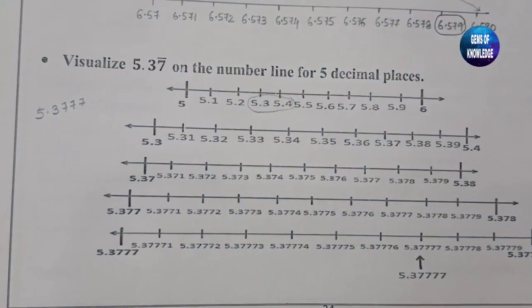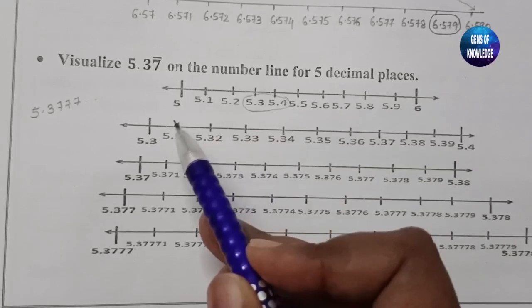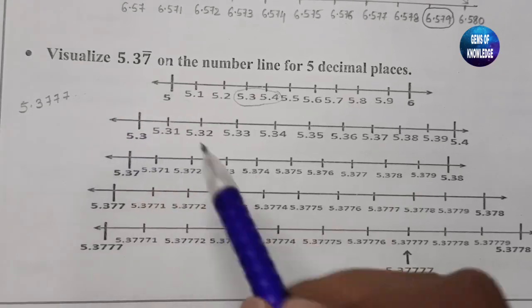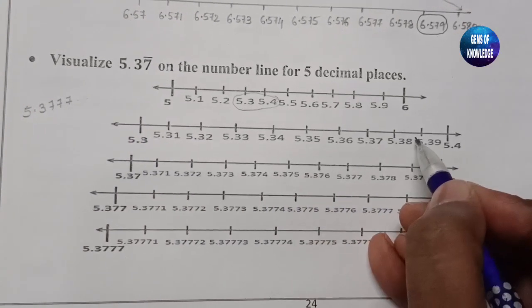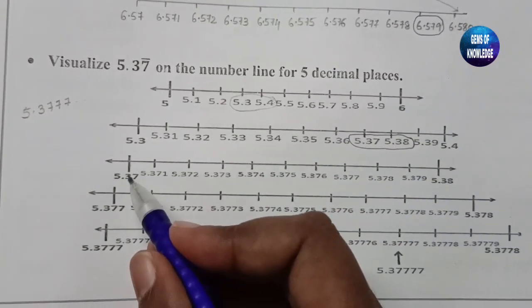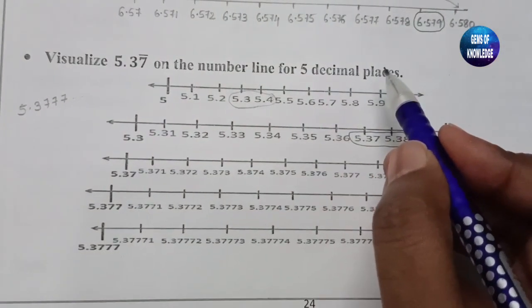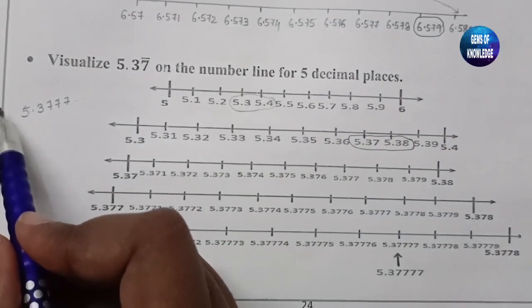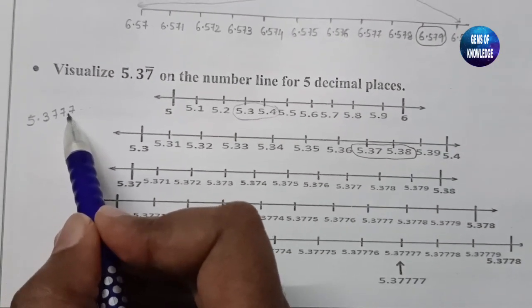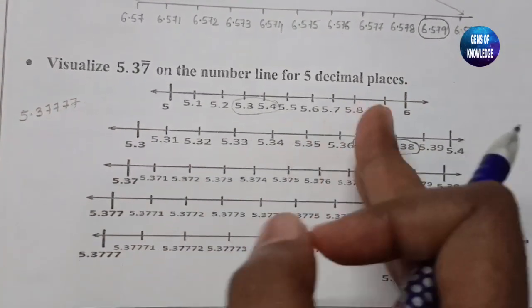This is 5.3 and 5.4. After expanding, we need 5.37, so 5.37 and 5.38 are taken. Again we expand 5.37 and 5.38. We need to go up to 5 decimal places — after the decimal point there should be 5 digits: 1, 2, 3, 4, and one more 7. So we keep expanding.